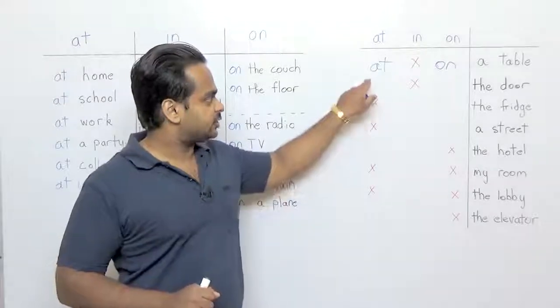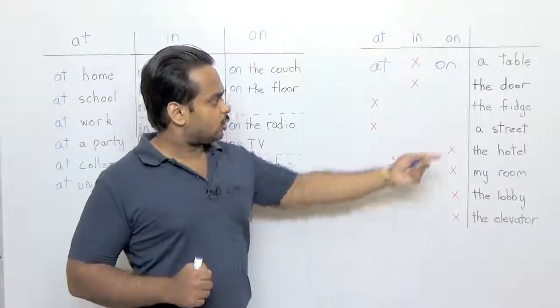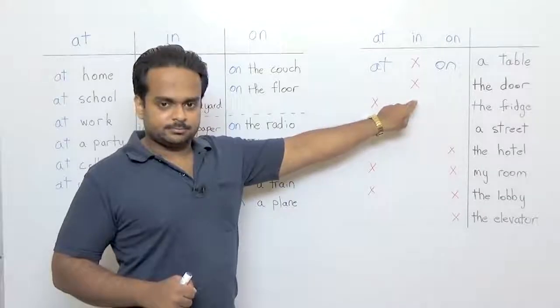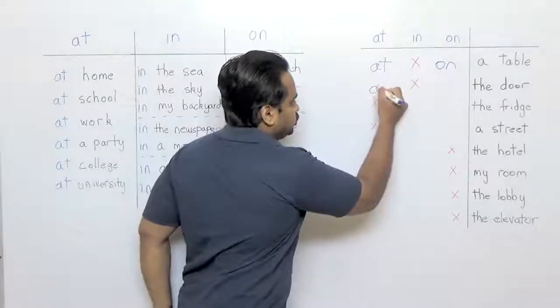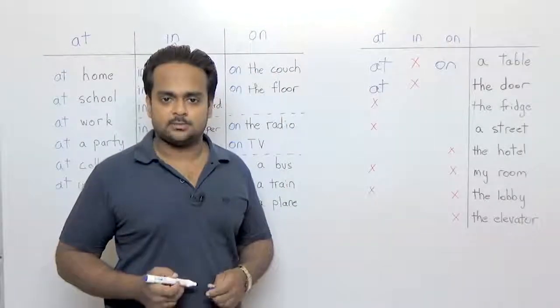At means next to a table and on means on top of. Next is door. Now with doors we don't use in again but we can use at to show that there is a person next to the door and that's a very common expression.